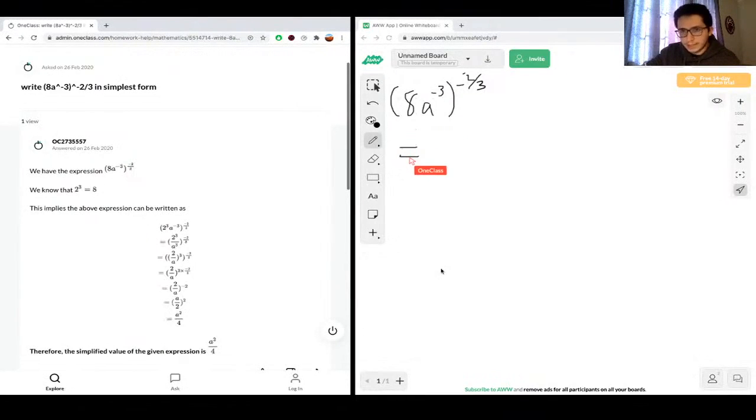Seeing the 8 in the beginning, we know that 8 is also equivalent to 2 to the power of 3. So 2 times 2 is 4 times 2 is 8. So we can start with that. We know 2 cubed, and then since a is to the negative 3, we can put that on the bottom of the equation. So (2^3 / a^3) all to the power of negative 2 over 3.